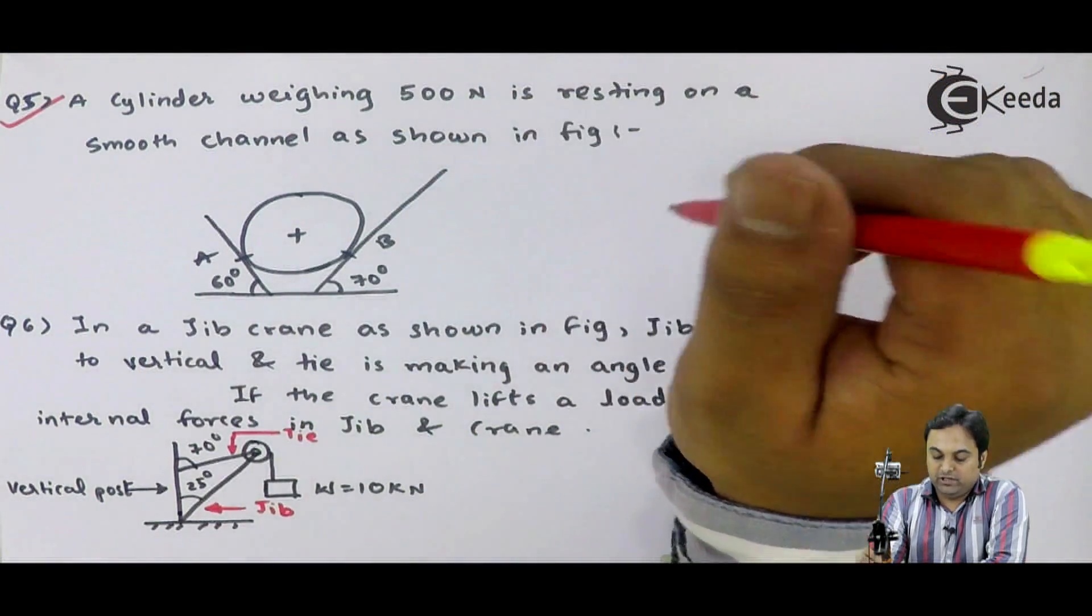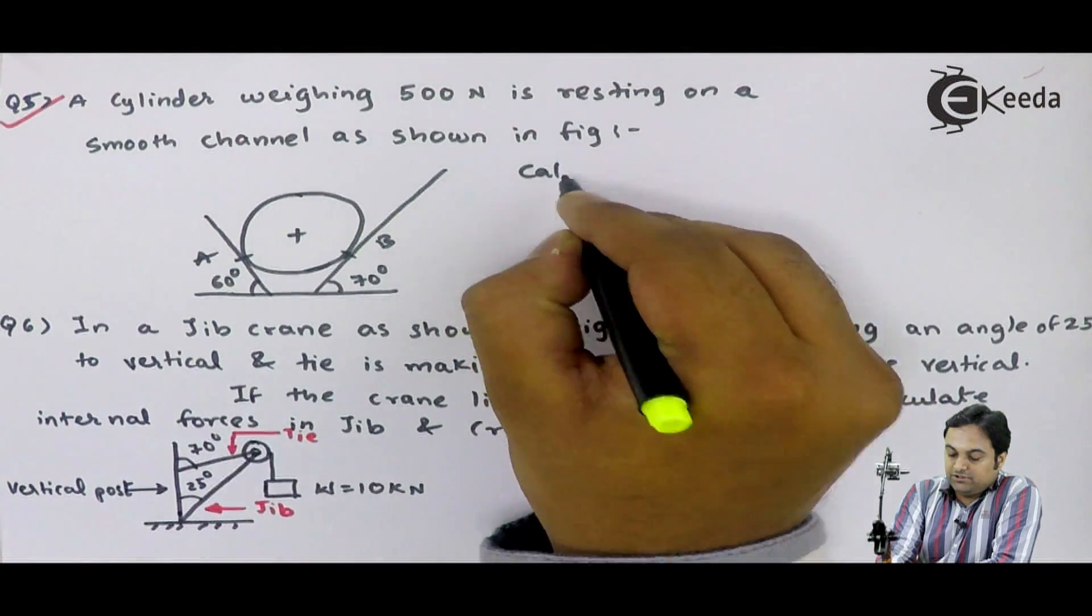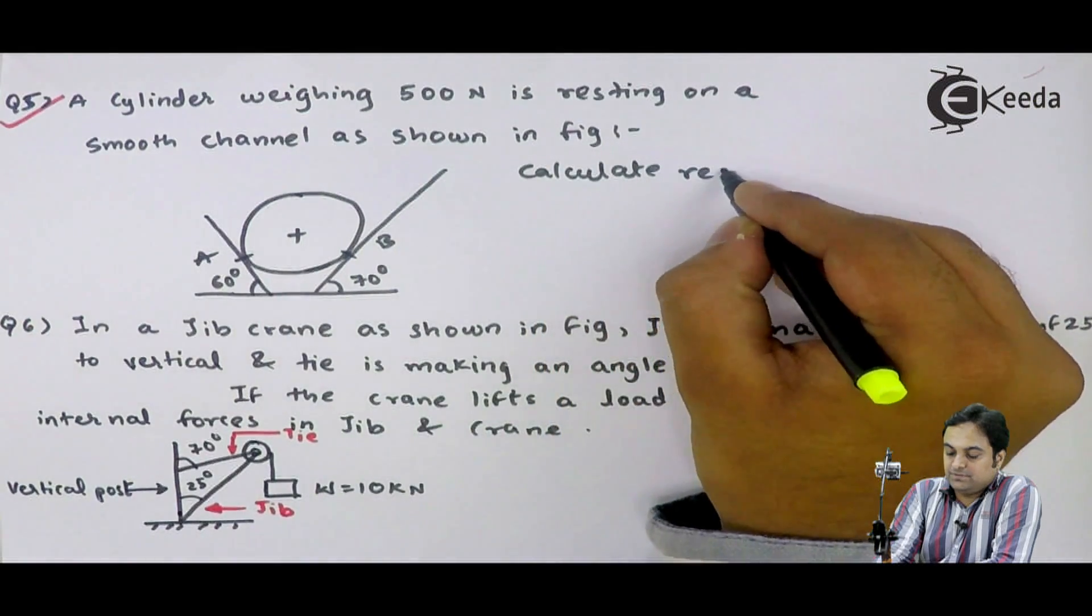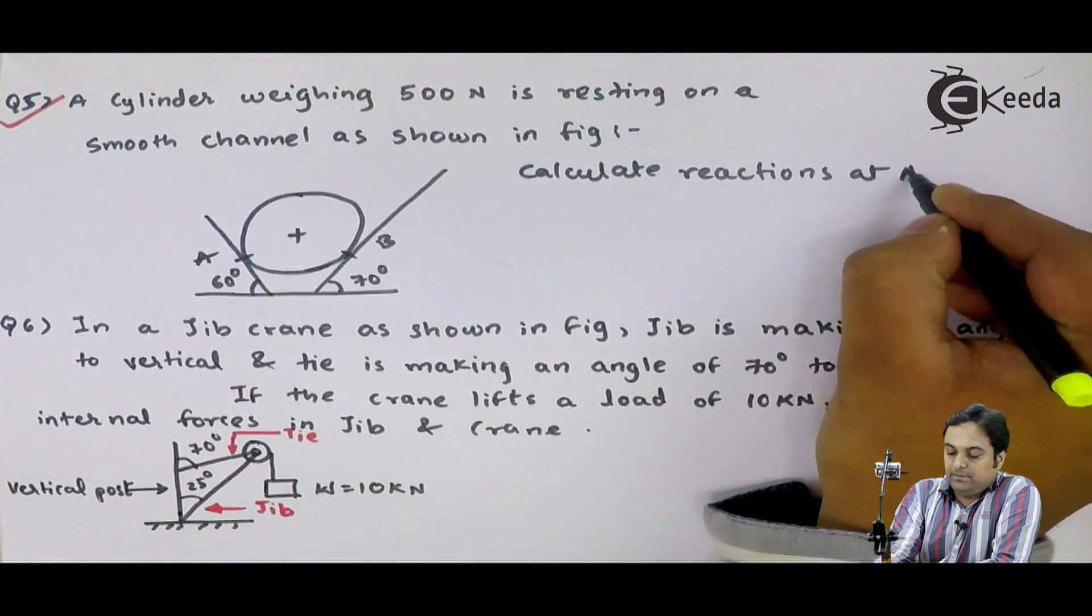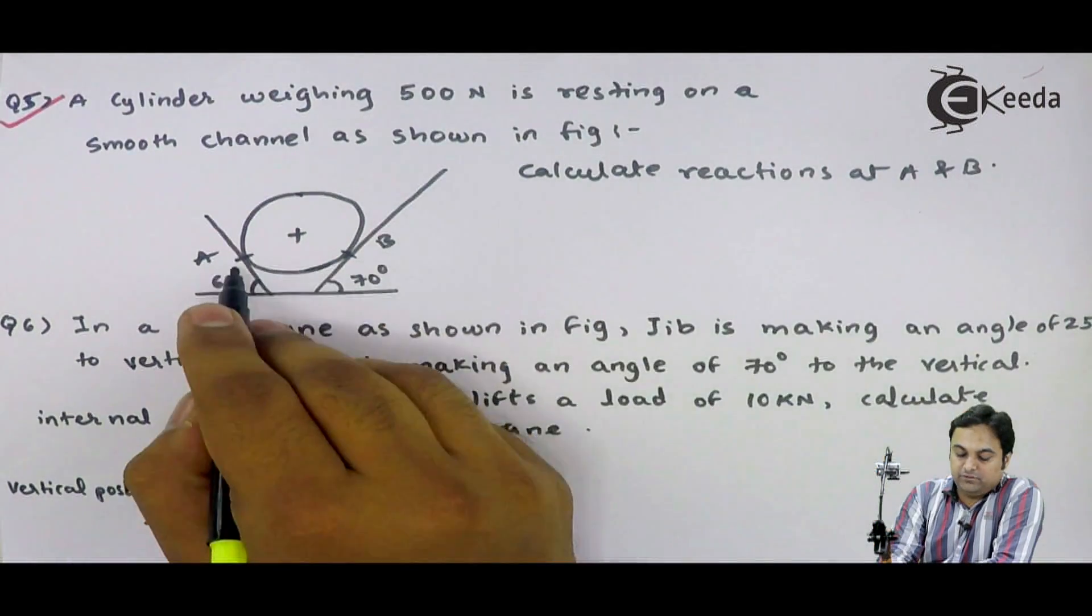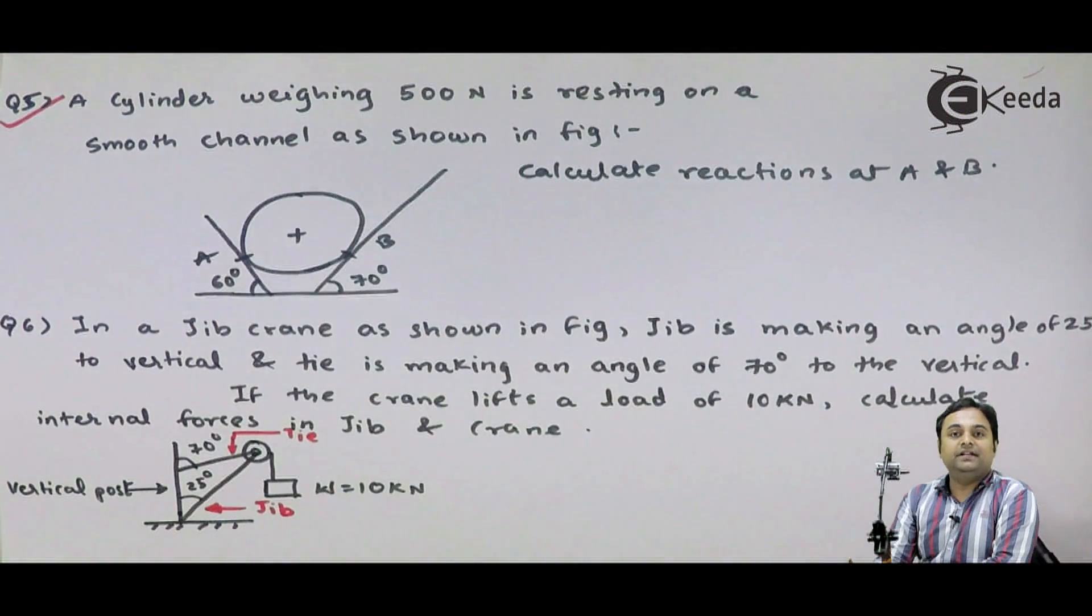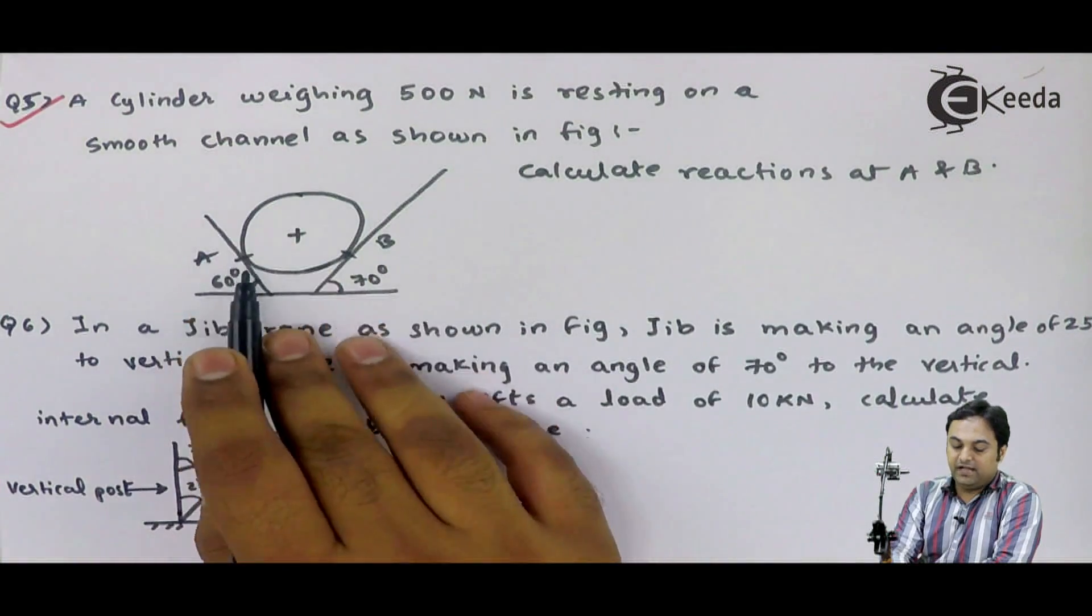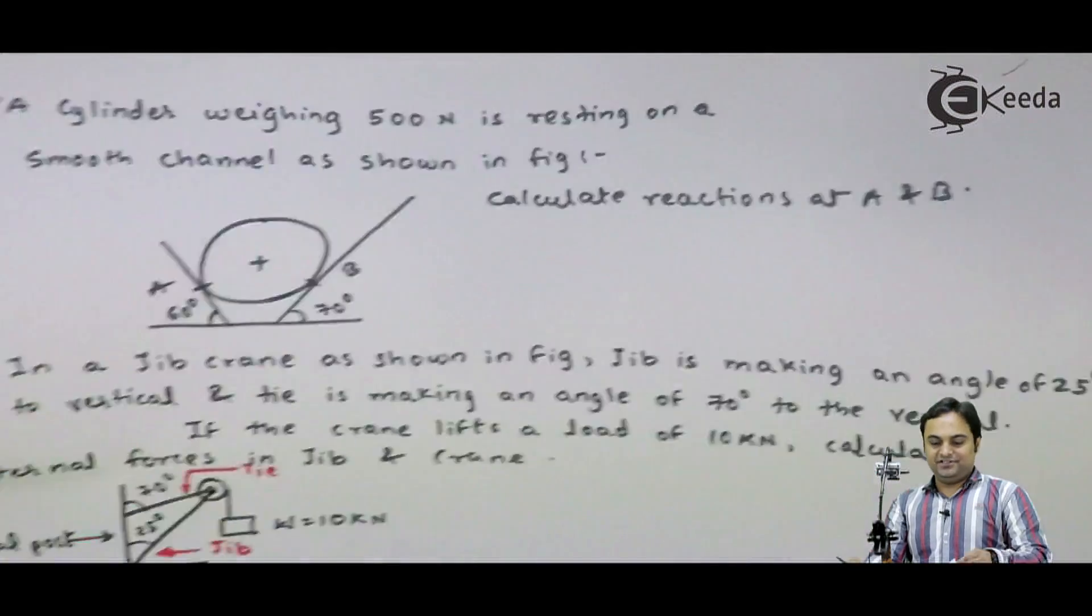Here also we have to calculate the reactions, that is calculate reactions at A and B. We have to calculate what are the reactions at point A and at point B at the contact between the cylinder and the supports. I will write the data for this question.